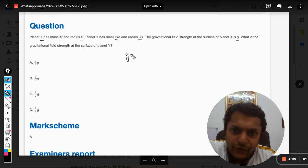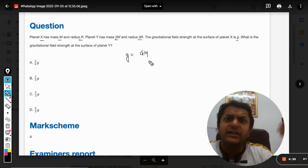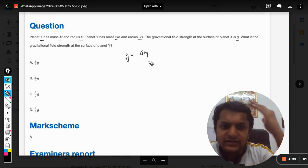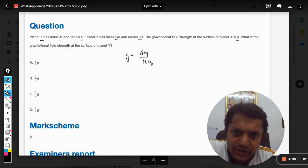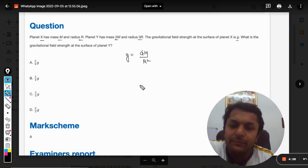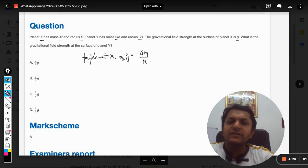The formula for the gravitational field strength, or gravitational field intensity, or acceleration due to gravity is G = GM/R². This is for planet X because everything is given like this.